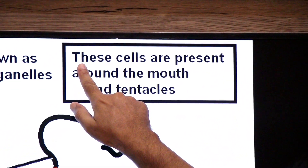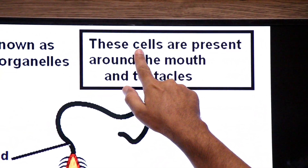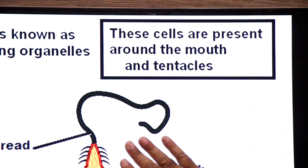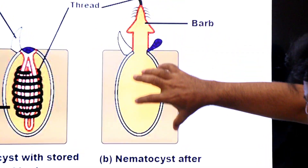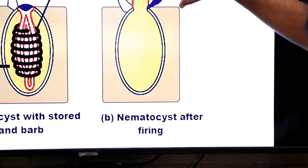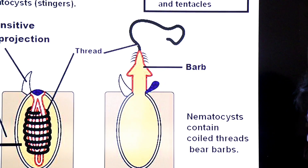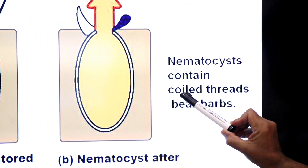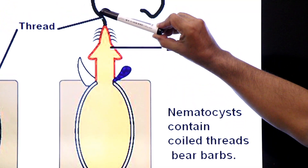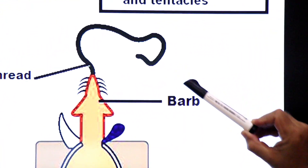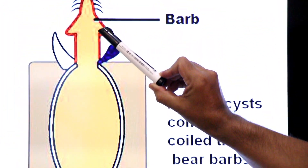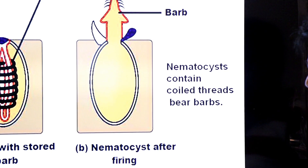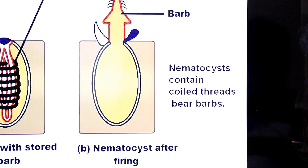Where are the cnidocytes present? These cells are present around the mouth and tentacles. Inside the cnidocyte, the nematocyst contains a coiled thread and sharp projections called barbs. Now we will learn the function of the nematocyst — how cnidarians sting their prey with the help of nematocysts.